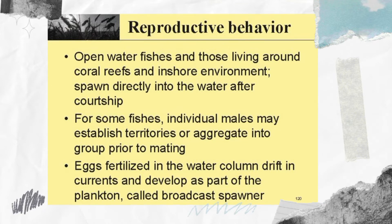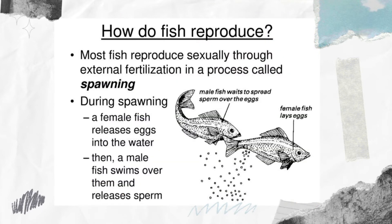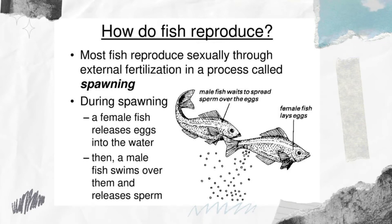The reproductive behavior of bony fish is cyclical, meaning it happens on a timed and recurring basis. Most bony fish reproduce at least once a year, and the process is called spawning. When open-water fishes and those living around coral reefs spawn directly into the water after courtship, individual males may establish territories or aggregate into groups prior to mating. Eggs fertilized in the water column drift in the currents and develop as part of the plankton — these are called broadcast spawners. Spawning may be triggered by changes in sunlight, daily temperatures, tides, and many other environmental factors.